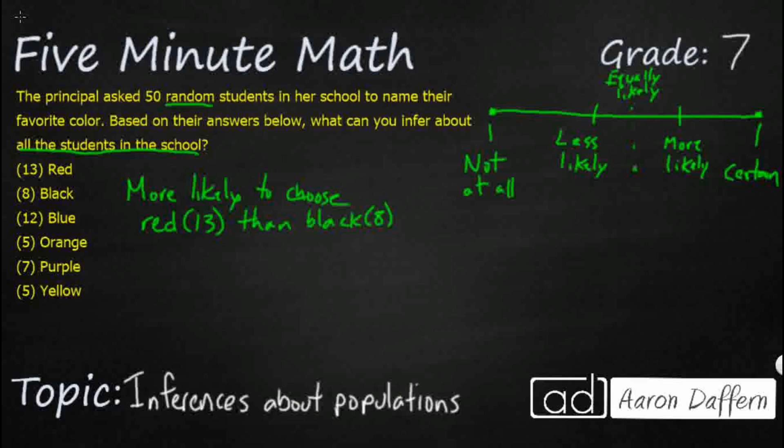We can make something else like this. We can say less likely to choose, and we'll find a smaller number. So let's say purple, that's going to be seven. Then let's find one that's larger than that, so let's say blue, and that's 12. We don't know if we ask every student in the school, maybe more people like purple, but in our random sample the inference shows us that we have a less likely chance to choose purple than we do blue.